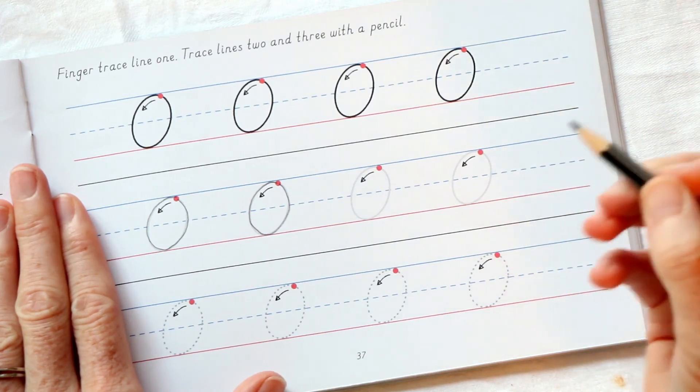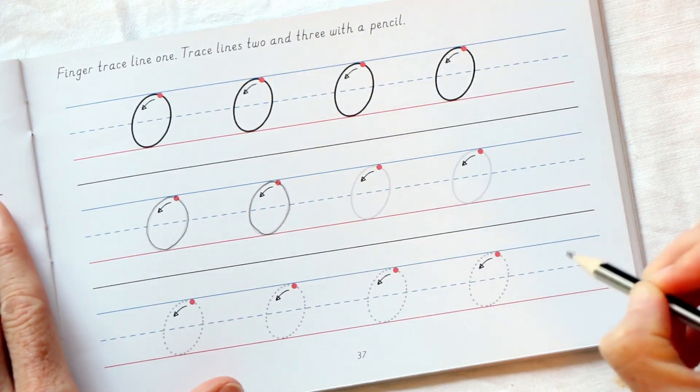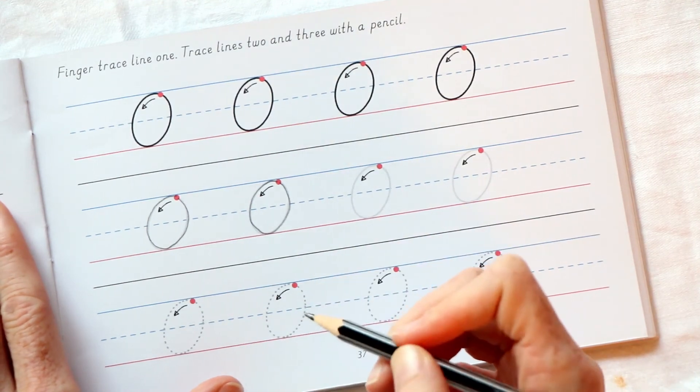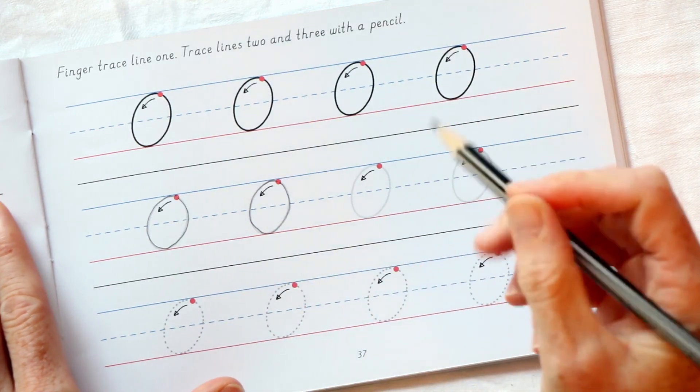Good. Now we're going to go to the third line, the bottom line. In this line you are going to repeat the script whilst you write, and I'm going to draw with you. Let's go, find.